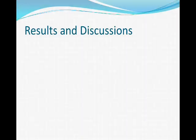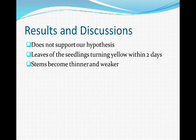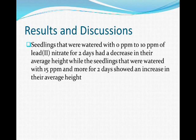The data collected does not support our hypothesis. Qualitative observation of the leaves turning yellow within two days suggested that chlorophyll levels in the sunflower leaves had decreased. In addition, lead ions caused the stems to become thinner and weaker, meaning seedlings with thin stems are flimsy and will not survive for long. Seedlings watered with 0 ppm to 10 ppm of lead nitrate for two days showed a decrease in average height, while those watered with 15 ppm and more showed an increase in average height.